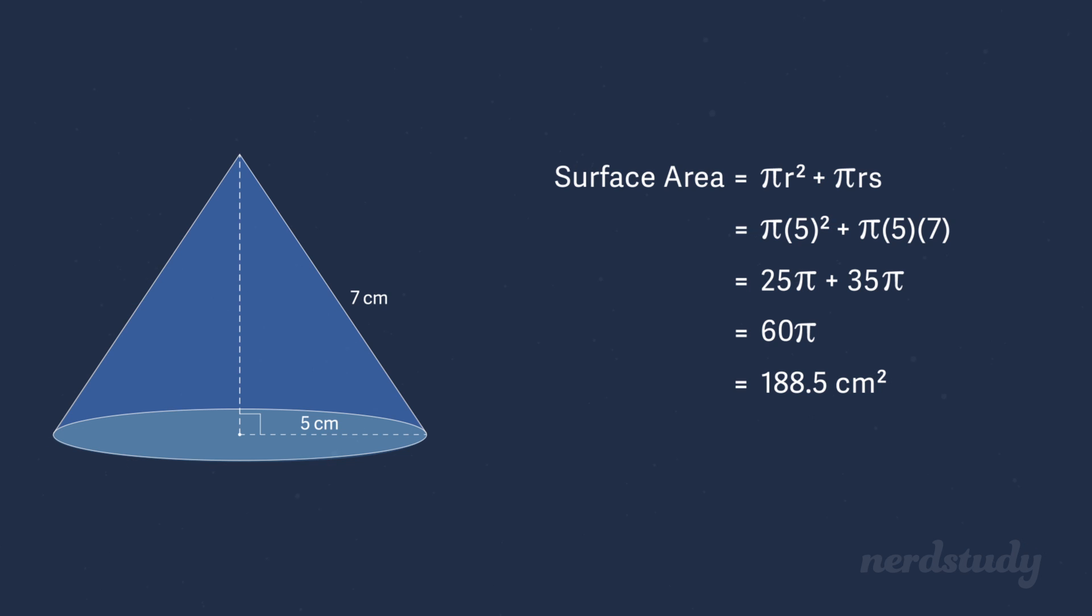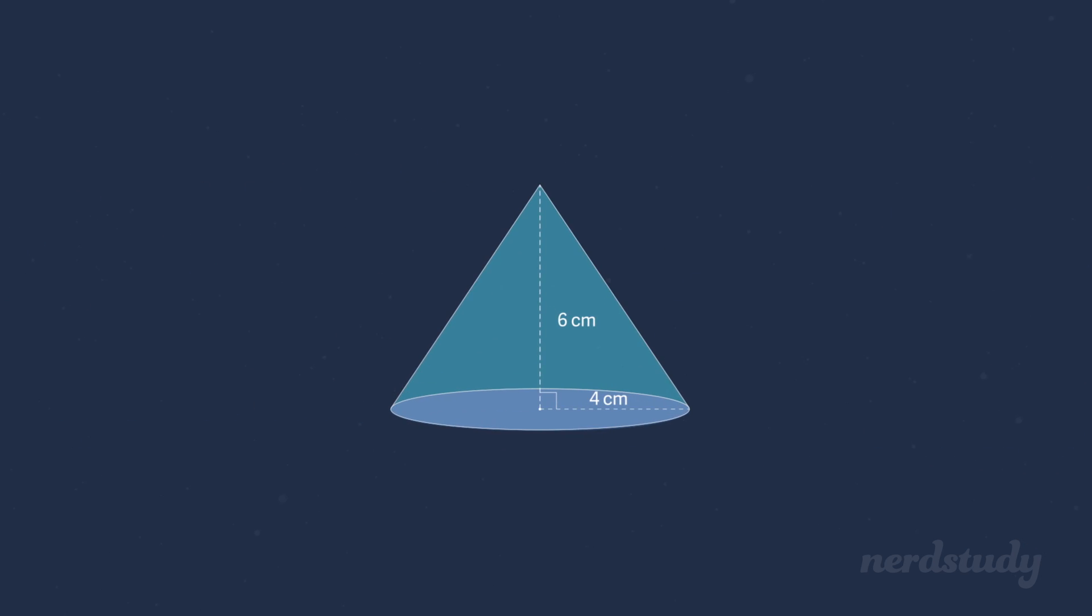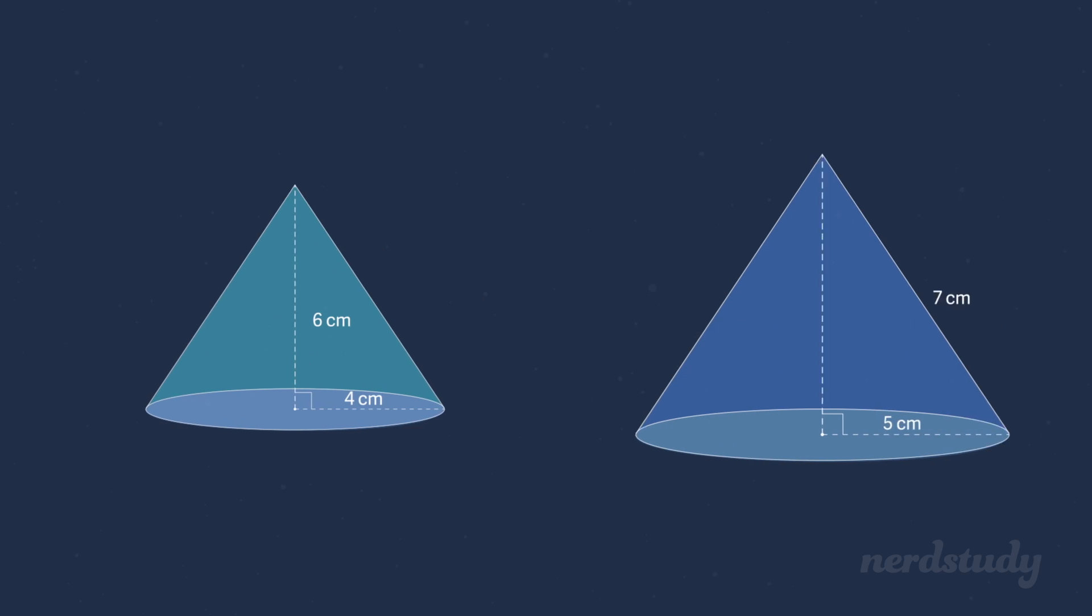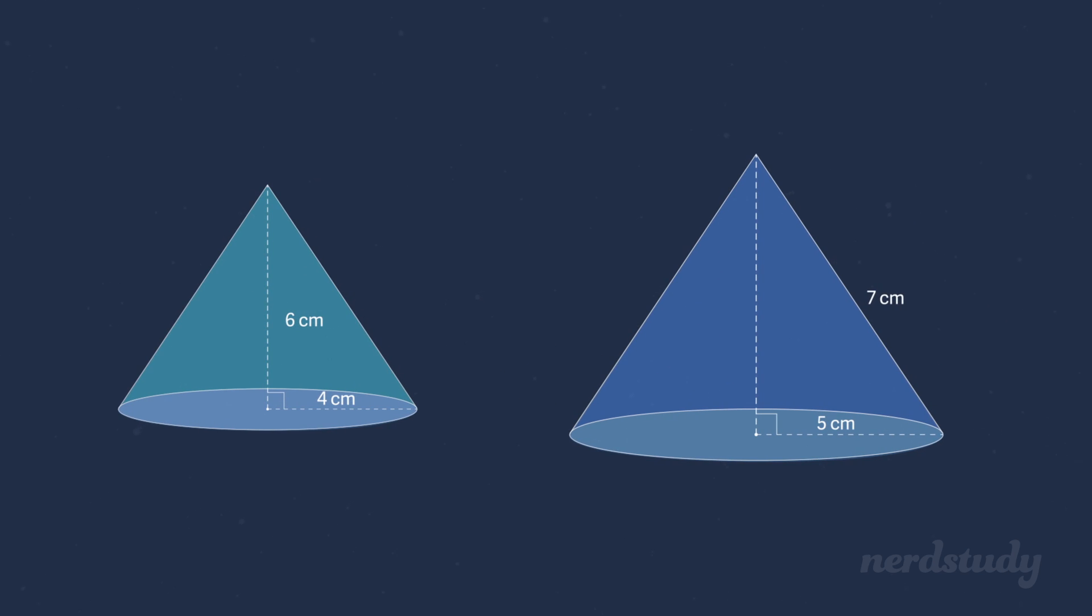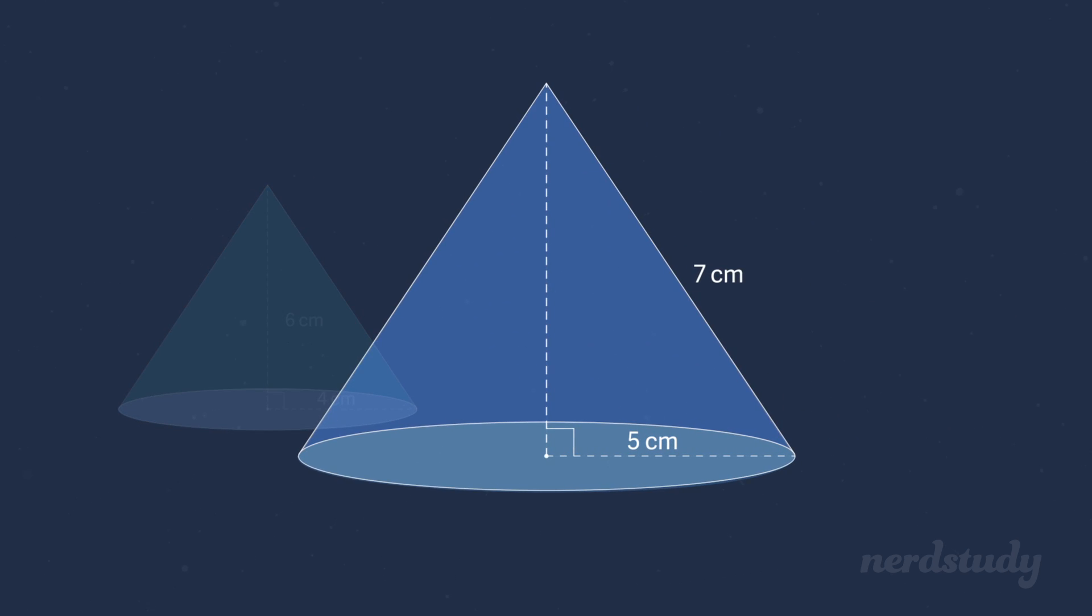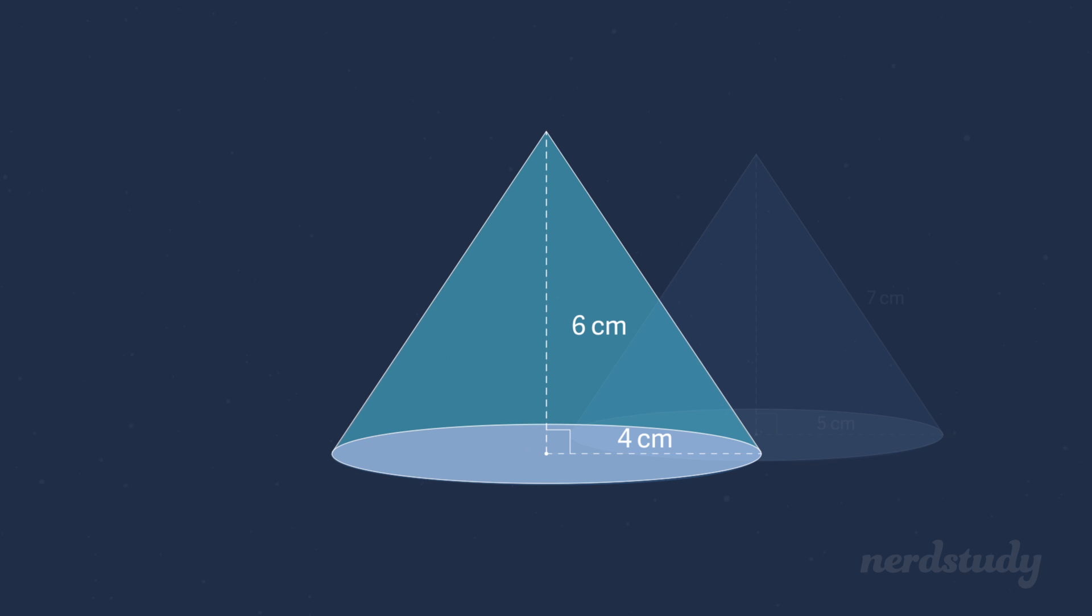Let's try another example. Alright. Before we move further, we need to see the difference between this question and the previous one. The previous question gave us the values of the radius and slant height. This question, however, gives us the radius and the height of the cone itself.